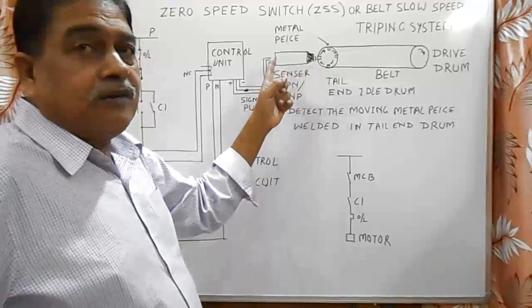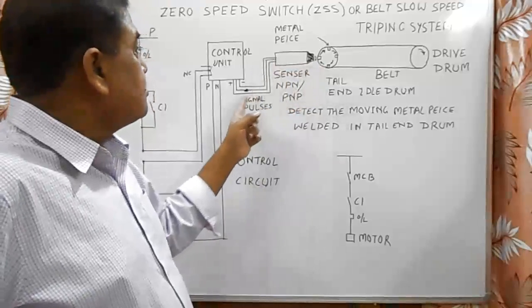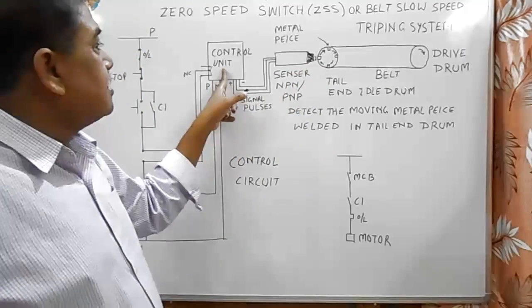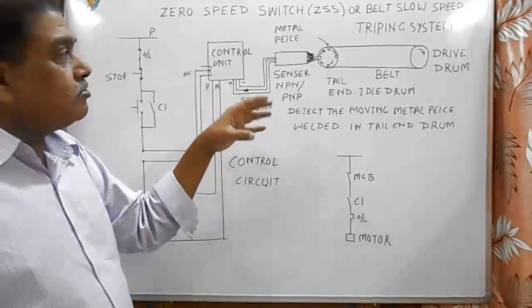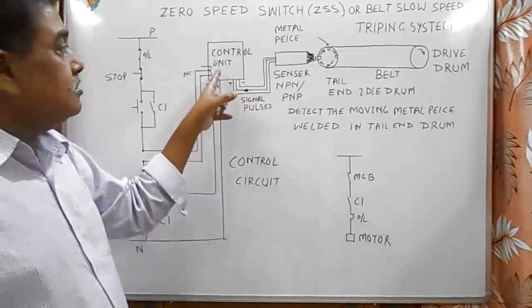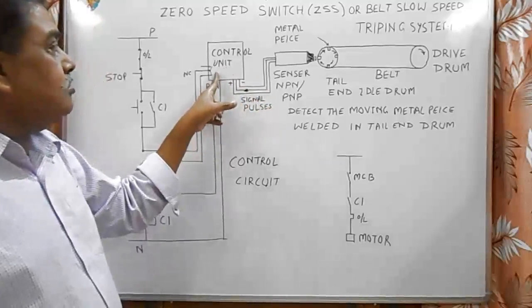These pulses go to the control unit. From here it senses that the belt is rotating at a correct speed, so this may maintain the contact to the closed position.